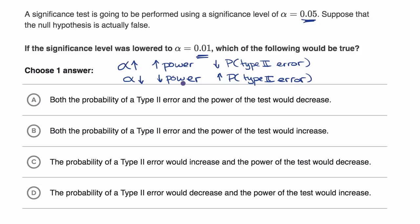And so which of these choices are consistent with that? Well choice A says that both the type two error and the power would decrease. Well these two things don't move together. If one increases, the other decreases. So we rule that one out. Choice B also has these two things moving together, which can't be true.